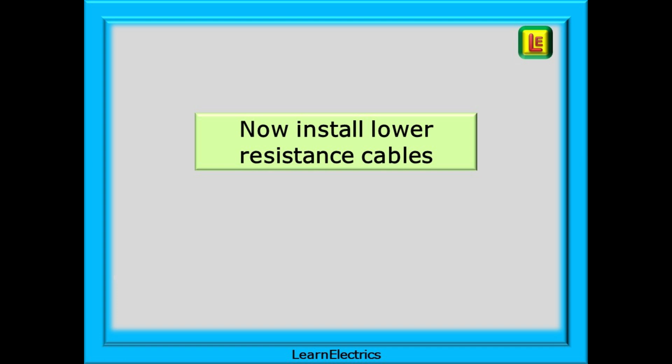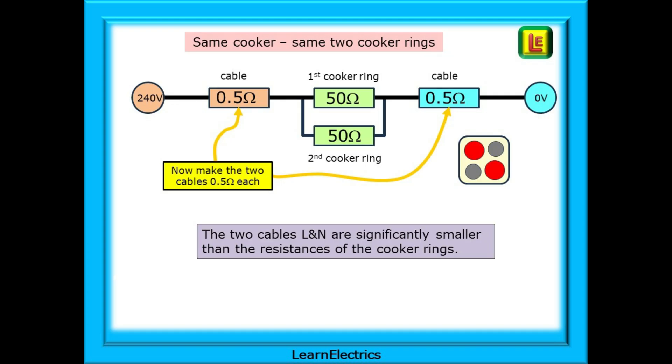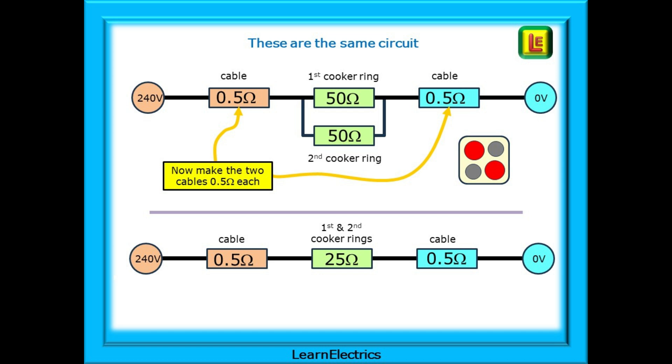Now we decide to install lower resistance cables, closer to what we would find in real life. What differences is this going to make? This is the same cooker with the same two cooker rings turned on. Now we've made the line and neutral cables just 0.5 ohms in resistance. The two cables are now significantly smaller than the resistances of the cooker rings. Together they make up less than 4% of the total circuit resistance. Here is our effective circuit shown at the bottom. Two 50 ohm resistors in parallel making a 25 ohm resistance.